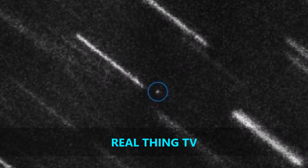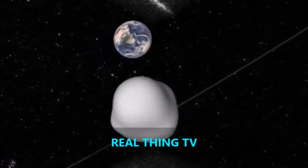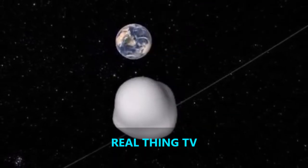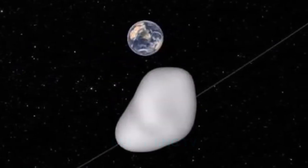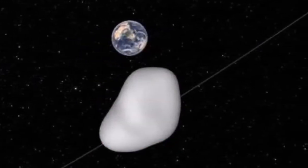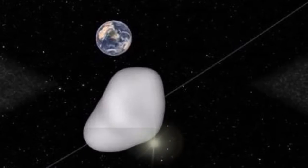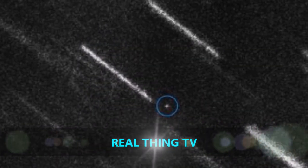Asteroid 2012 TC4 was discovered in 2012 by the Pan-STARRS Observatory in Hawaii. During the original observation, it was revealed the asteroid's next approach to our vicinity would be on October 12, 2017.